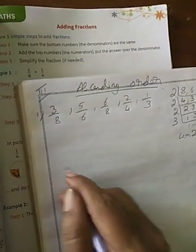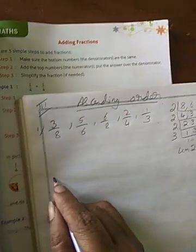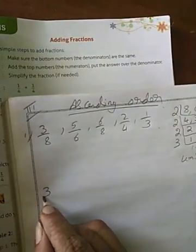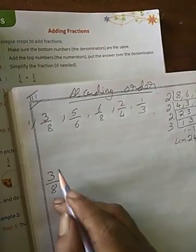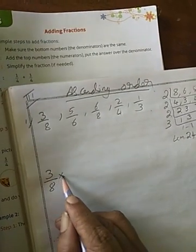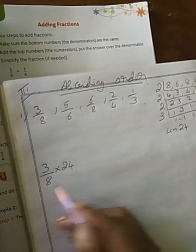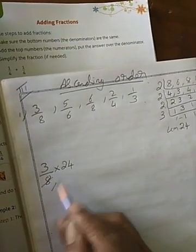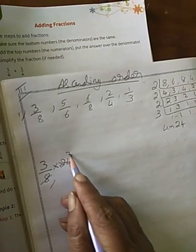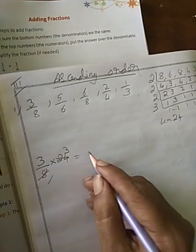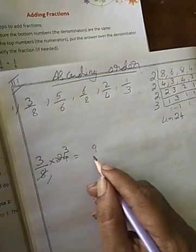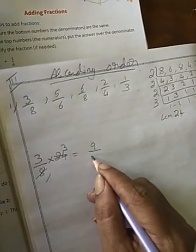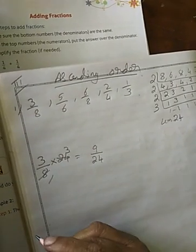For each fraction you have to put the LCM children. See, the first fraction is what? 3 by 8, multiply 24. How many times it will go? 8, 1's a 8, 3's a — remaining what? 3, 3's a 9. That is 9 by 24 LCM.